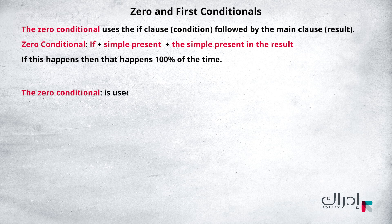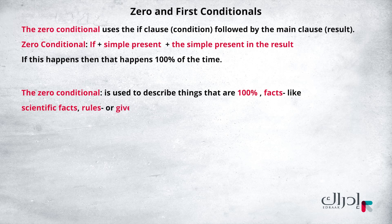The zero conditional is used to describe things that are 100% facts, like scientific facts, rules, or to give instructions — like in a game. So, when you are making a conditional sentence, ask yourself: is this a fact? Will the effect happen 100% if the cause happens? Are these the rules? Then these are zero conditionals.